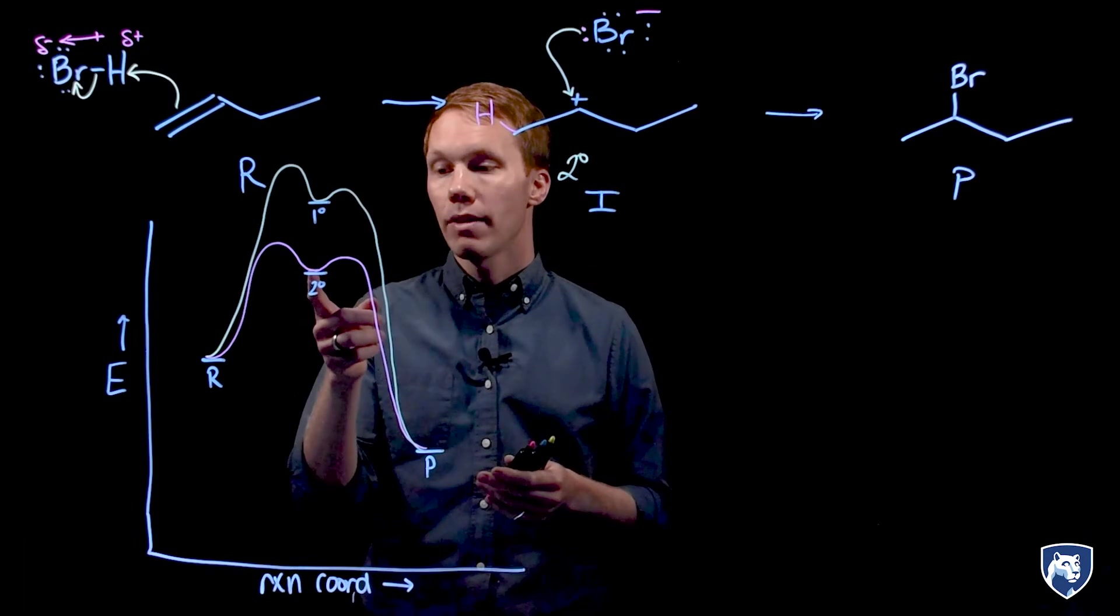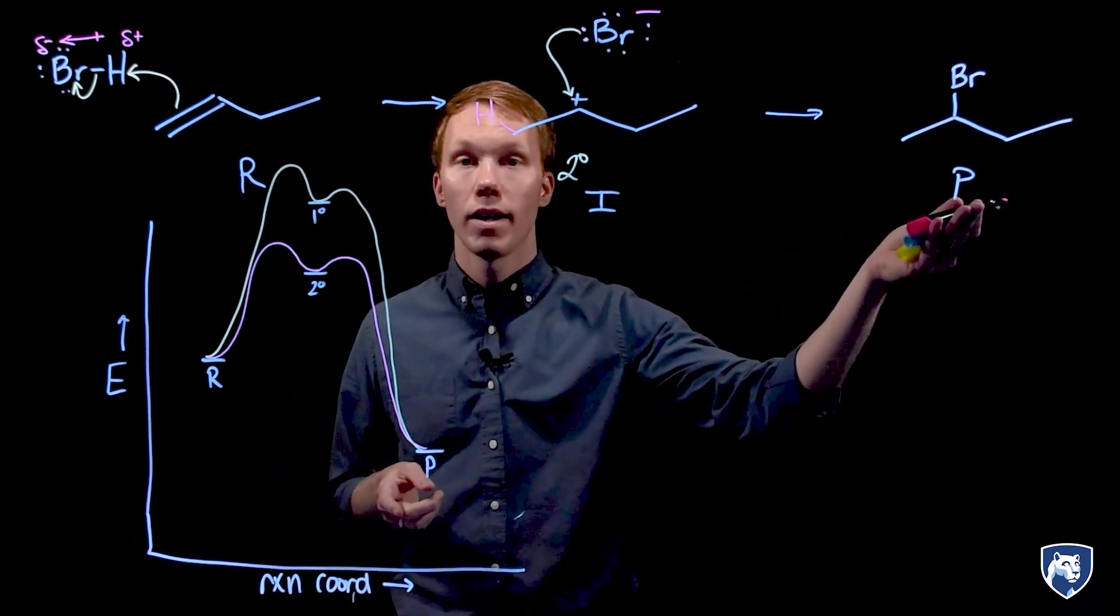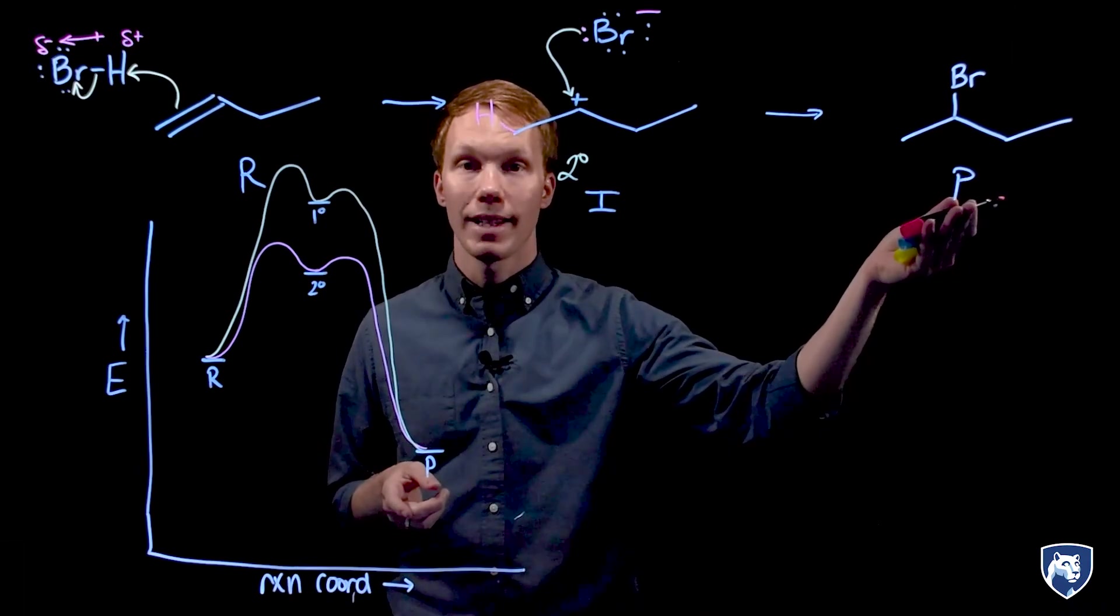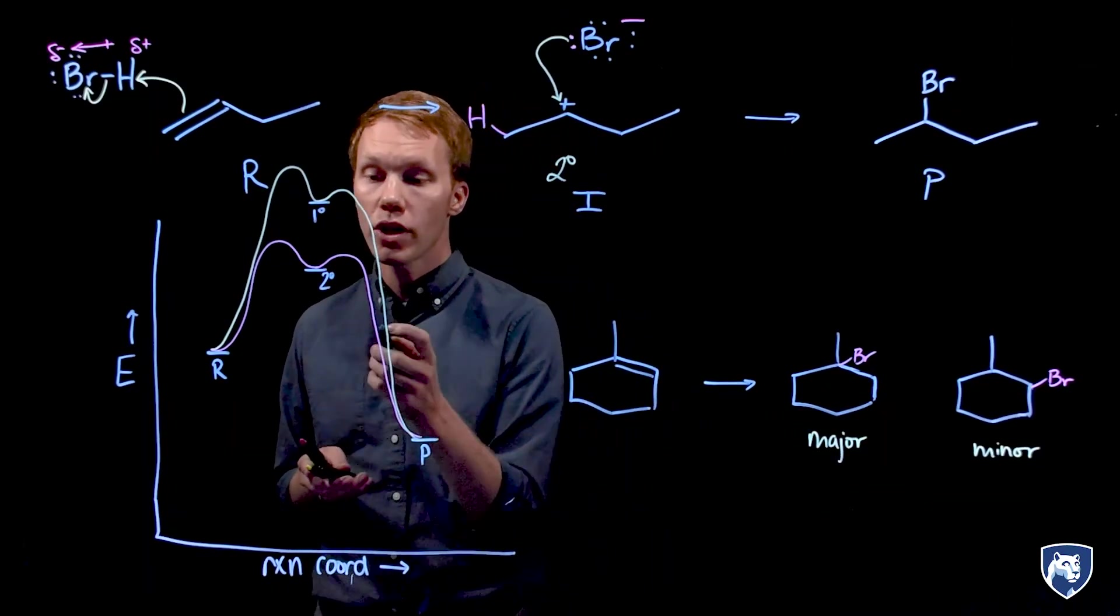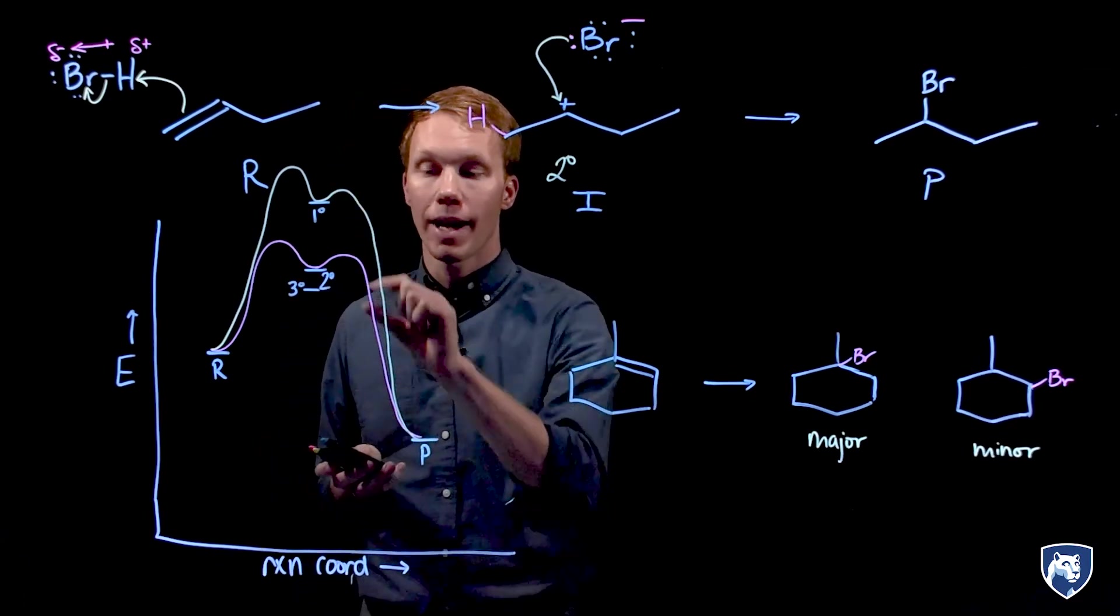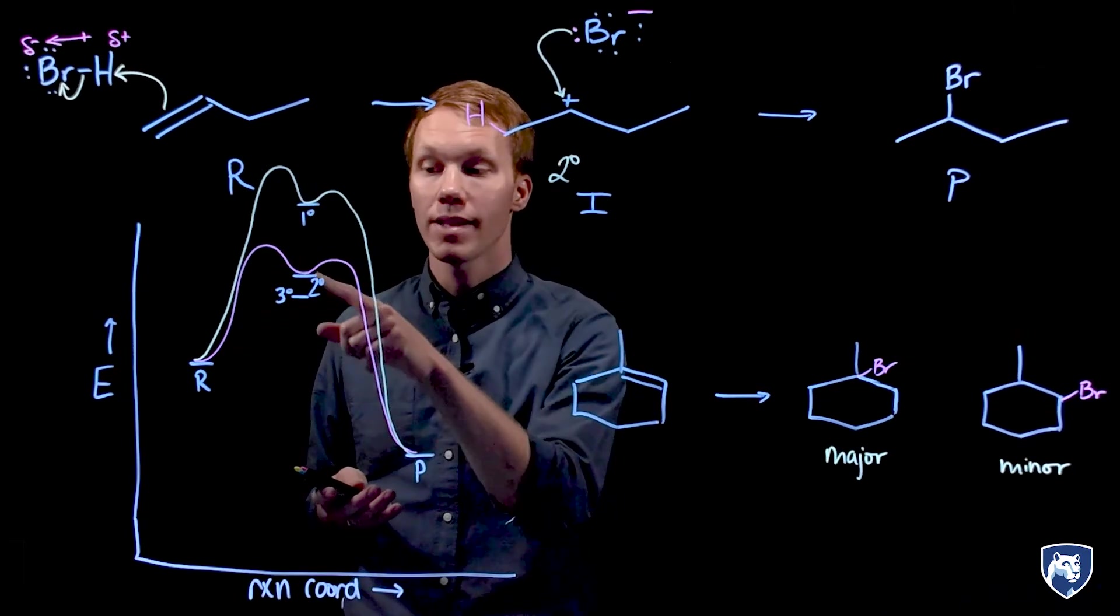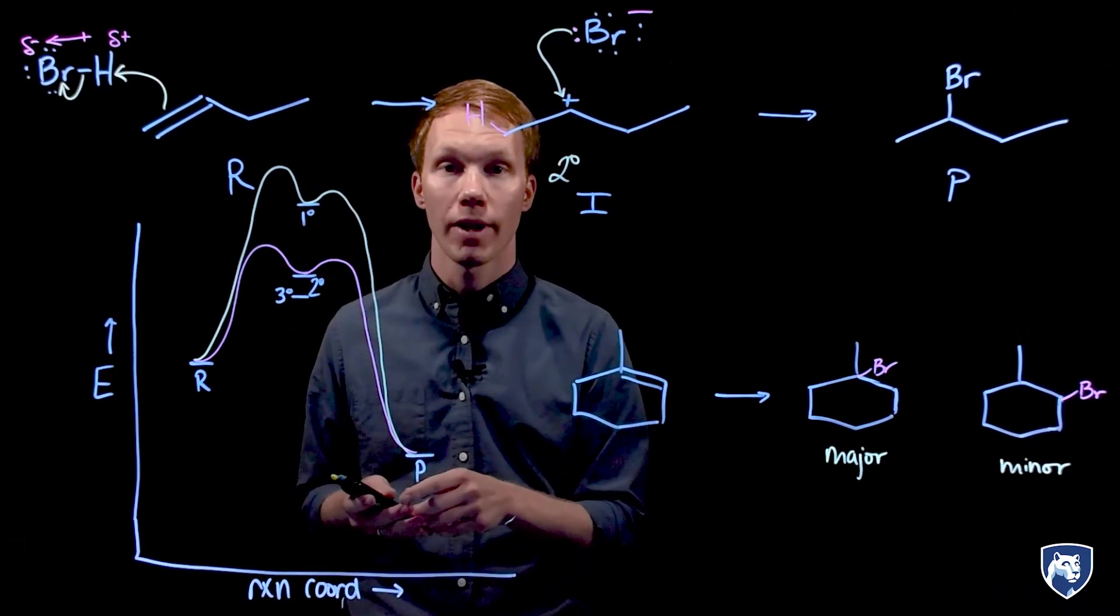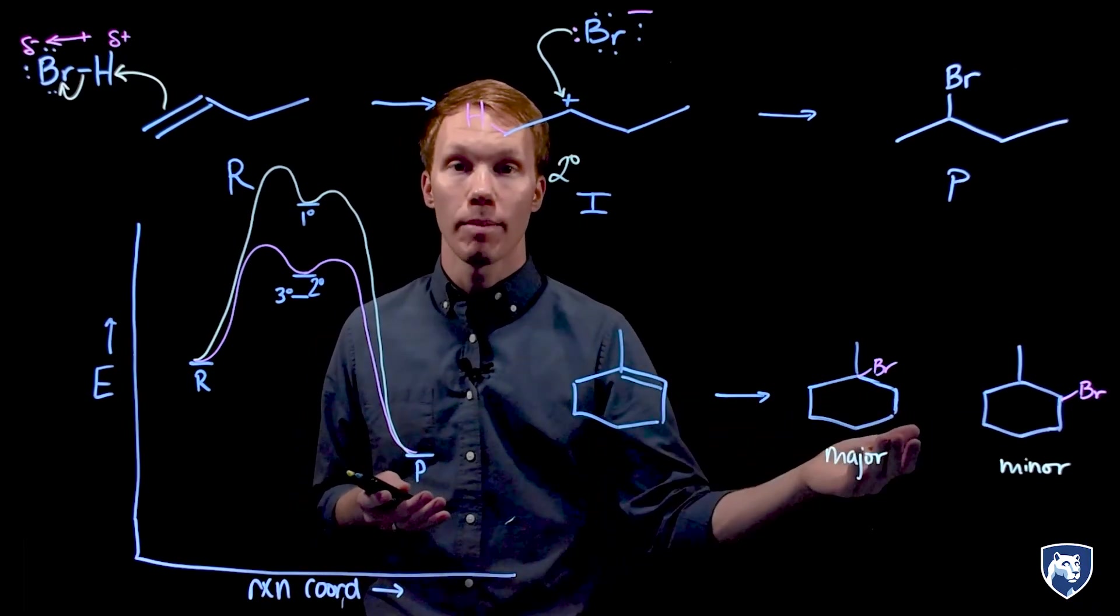The secondary carbocation forms faster which leads to more of our secondary alkyl halide. This reaction is less selective because the tertiary carbocation is closer in energy to that secondary carbocation. So there's more competition. The hill to climb is not that much higher for a secondary carbocation compared to a tertiary carbocation. That explains why we get less selectivity for this example here.